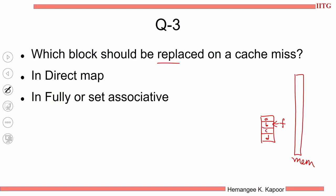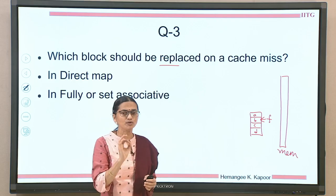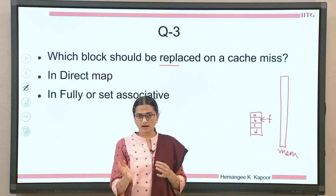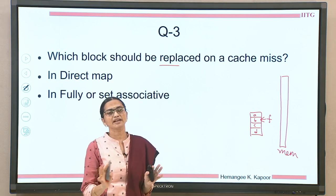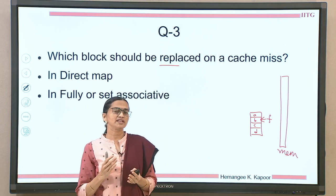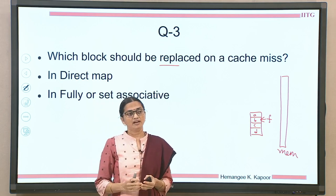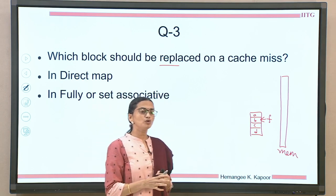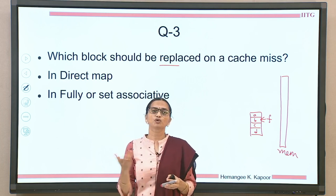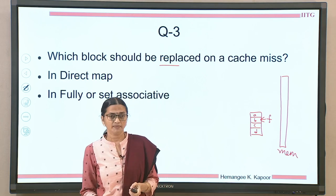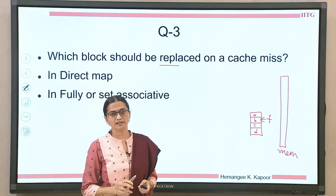This question is interlinked with the previous questions on the choices allowed for a block. In a direct map cache, every block has just one choice. So if F is coming, it comes with its address and it says I am going to sit where B is sitting, so B has to move out. We do not have much choice. Whereas in a fully associative or a set associative cache, you have multiple choices — like four chairs in your group and a new group member joins, then one of the four has to move out. This is what we address in question 3.